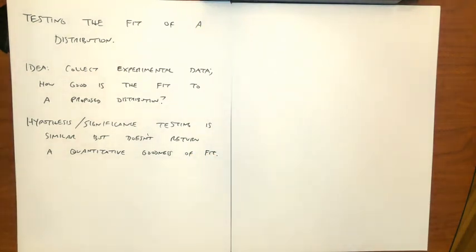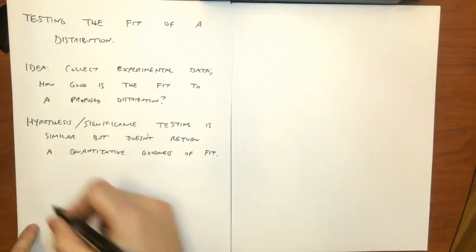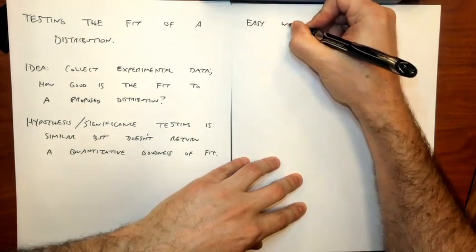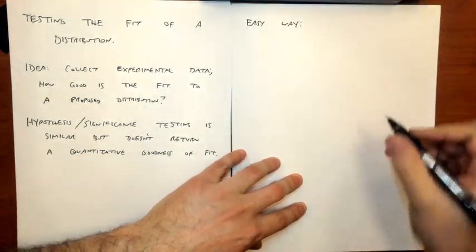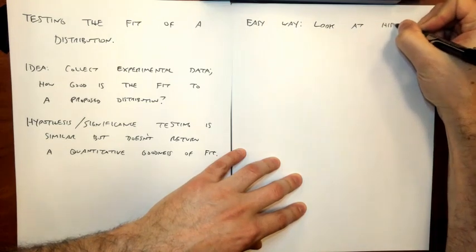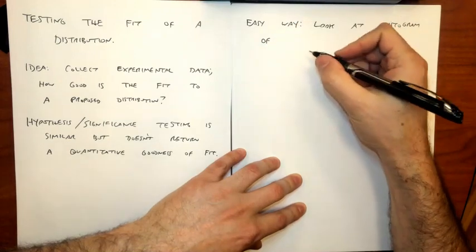An easy thing I could do is take my experimental data and make a histogram. Supposing this was a discrete random variable like rolling a die, I could look at all the die rolls from one to six and add up how often each happened. An easy way is to look at the histogram of the experiment.